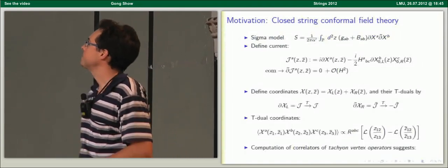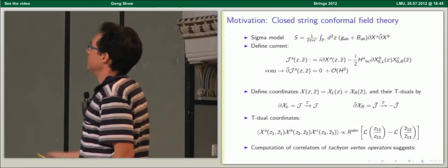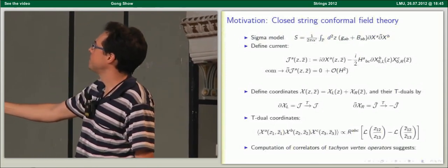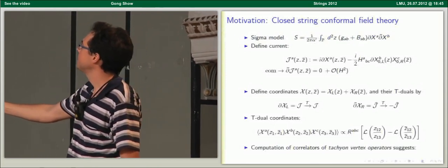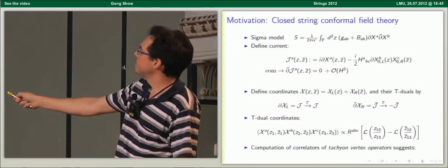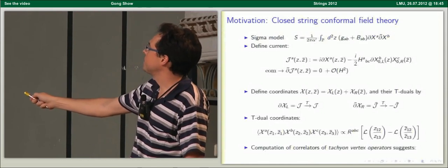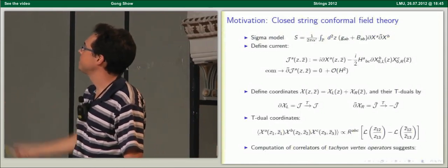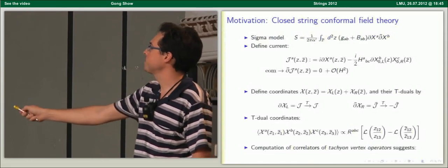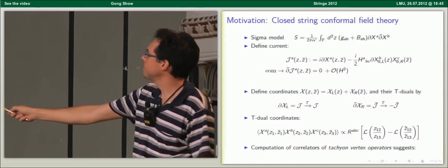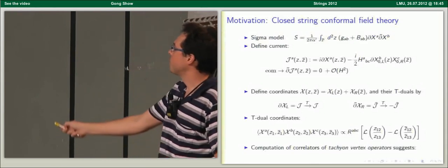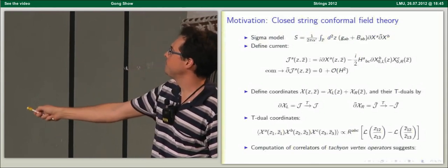One can now define coordinates by integrating the currents. T-duality is realized by reflecting the right-moving part. With these coordinates, we were able to calculate correlators — for example, the basic three-point correlator which is proportional to the R-flux if we do three T-dualities in every direction. This R-flux is supposed to be the flux obtained by doing three T-dualities on the H-flux. There is in addition a worldsheet-dependent part given by the Rogers-style logarithm.